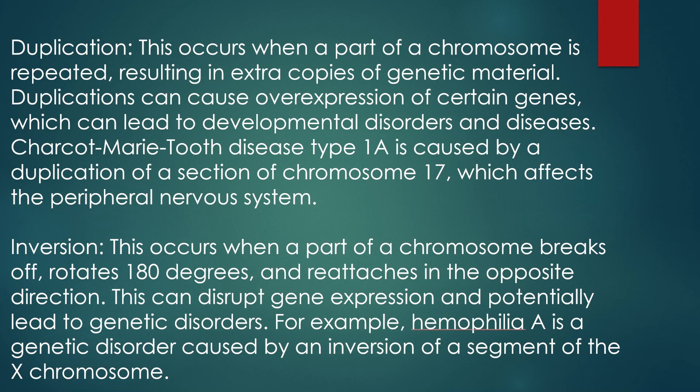Duplication is the second form of Chromosomal Aberration. This occurs when a part of a chromosome is repeated, resulting in extra copies of genetic material. Duplication can cause overexpression of certain genes, which can lead to developmental disorders and diseases.